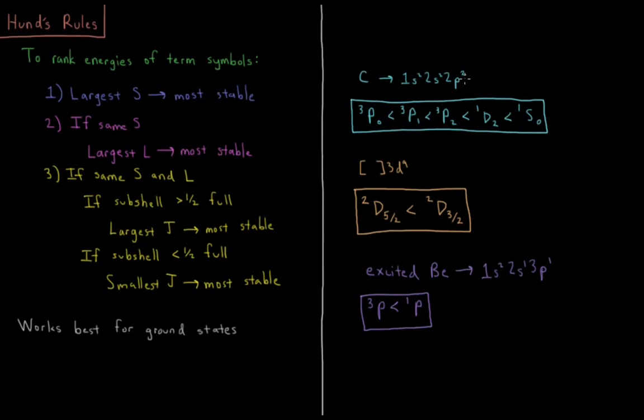So for our carbon atom, we have only P's for the triplets. Within the singlets, we have a D and an S. So D is L equals 2, S is L equals 0. So the singlet D wins over the singlet S. Singlet D is lower in energy than singlet S.